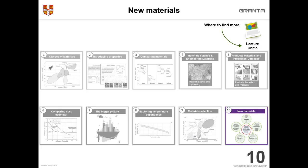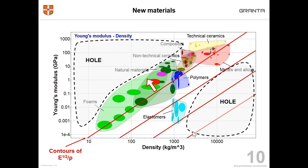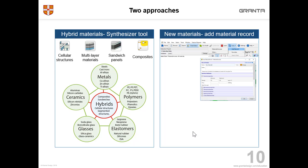Lastly, tip number ten: new materials. Here we can see areas on the chart where currently we have no materials available. However, it would be great to have materials that were stiffer and lighter. There are two approaches using CES EduPack to explore those new materials. The first is to use the synthesizer tool — it has hybrid material models such as sandwich panels and composites, where you can calculate the properties of a hypothetical material. Secondly, you're able to add your own records, so if you have data on a material that you've been testing, you can put it into the database and compare it to reference materials.